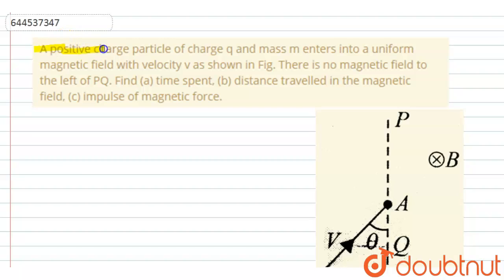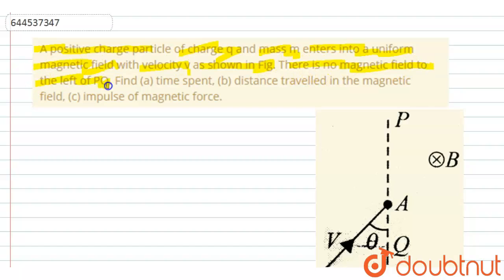The given question is: a positive charge particle of charge q and mass m enters into a uniform magnetic field with velocity v as shown in the figure. There is no magnetic field to the left of PQ. We have to find: (a) the time spent, (b) the distance travelled in the magnetic field, and (c) the impulse of the magnetic force.